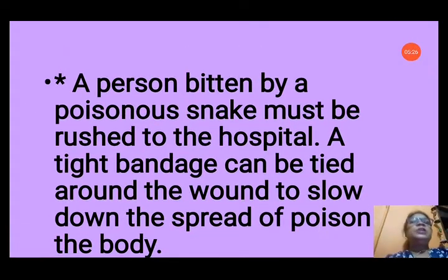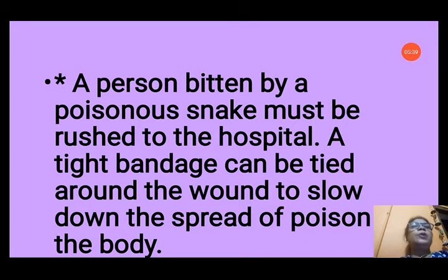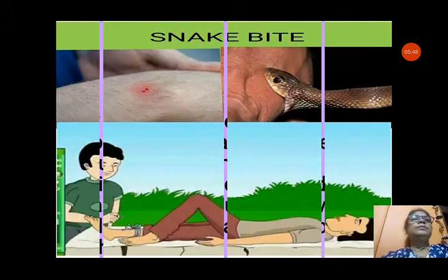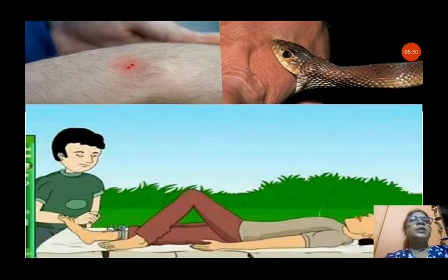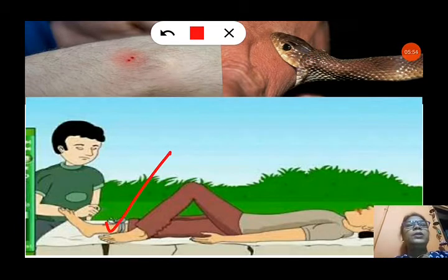A person bitten by a poisonous snake must be rushed to the hospital immediately. But before rushing to the hospital, a tight bandage can be tied around the wound above the bitten area to slow down the spread of poison through the body. You can see in this picture a cloth tied around the wound to slow down the spread of poison.